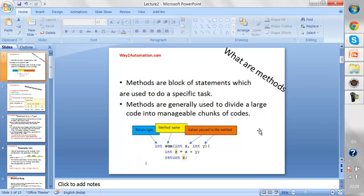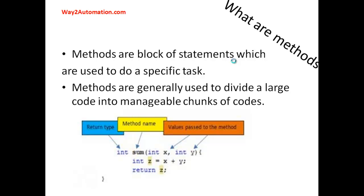Methods are basically blocks of statements used to do a specific task. What we generally do with methods is divide a big task into different blocks, so that whichever block we need to execute, we just call that block by name. Whichever is not required, we don't call. So until you call a block, it will not be executed. Methods are generally used to divide large code into manageable chunks of code.